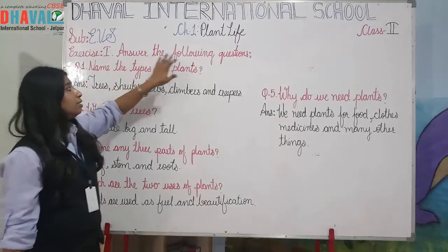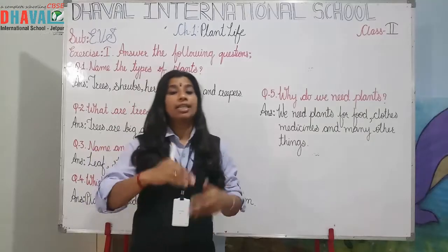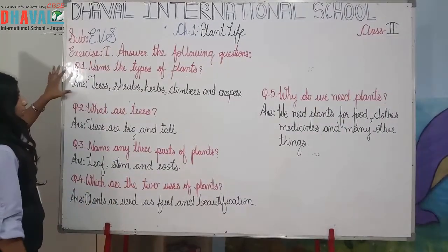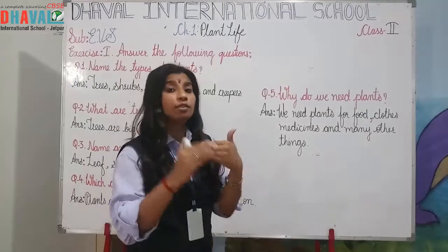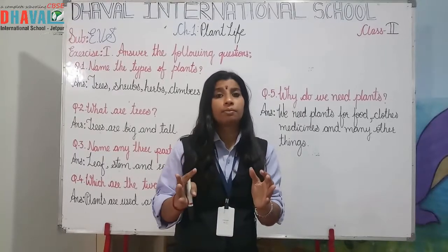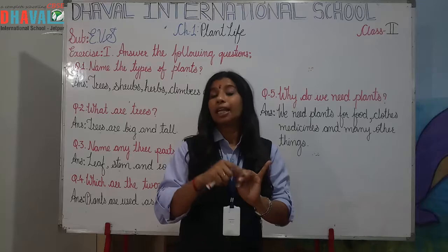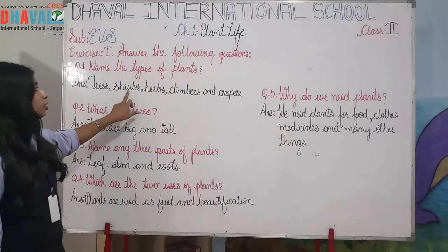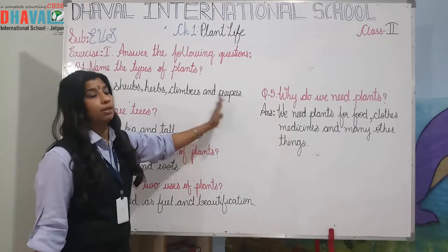Exercise 1: Answer the following questions. Our first question — name the types of plants. What are the types we have understood from the lesson? There are 4 types of plants: trees, shrubs, hops, climbers and creepers. So the answer is trees, shrubs, hops, climbers and creepers.